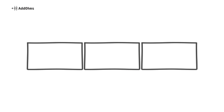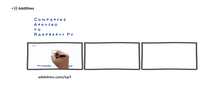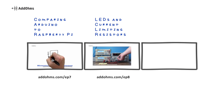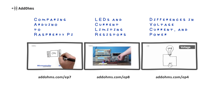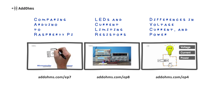The most popular videos so far are comparing Arduino and the Raspberry Pi, LEDs and current limiting resistors, and the difference between voltage, current, and power.